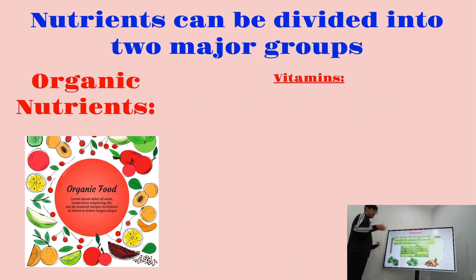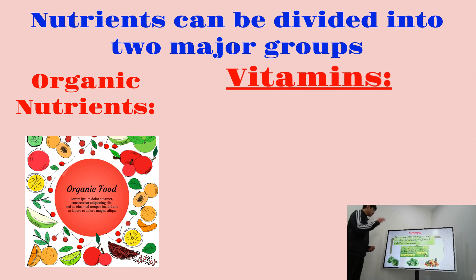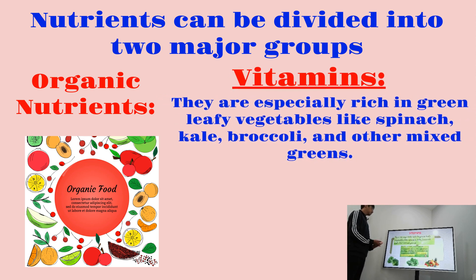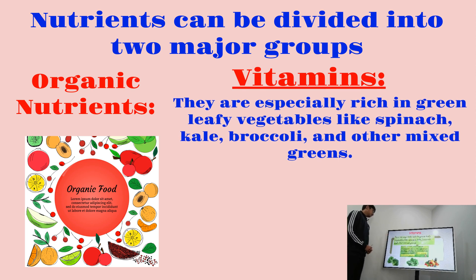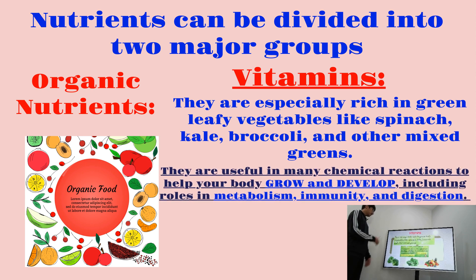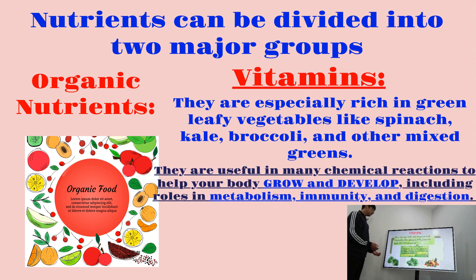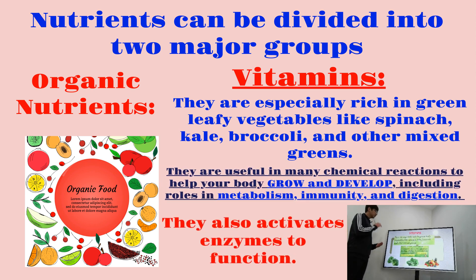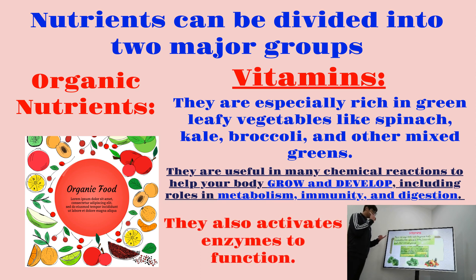The fourth organic nutrient category is vitamins. Vitamins are especially rich in green leafy vegetables like spinach, kale, broccoli, and other mixed greens. Vitamins are useful in many chemical reactions to help your body grow and develop, including roles in metabolism, immunity, and digestion, and they activate enzymes to function. To summarize organic nutrients: the four main categories are carbohydrates, proteins, lipids, and vitamins.